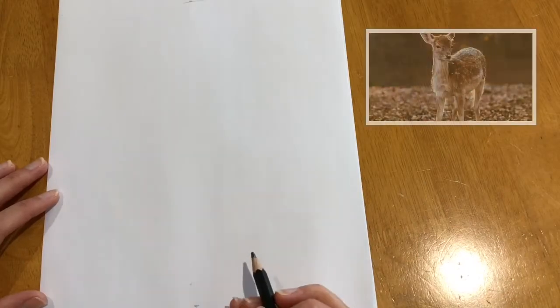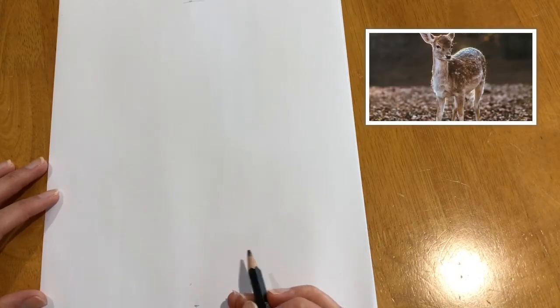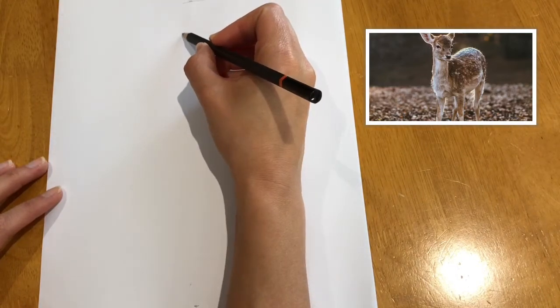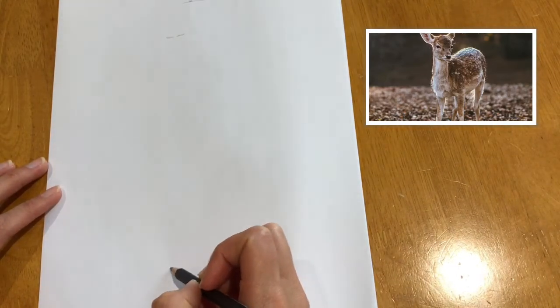First of all, we're going to mark where we think the drawing is going to start and where the drawing is going to stop. So I'm just going to do some dots, just one dot up here and another dot down here.